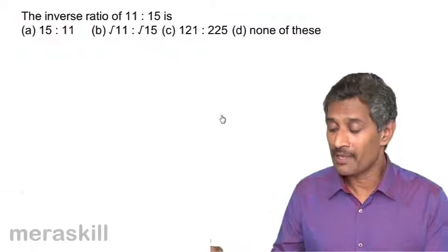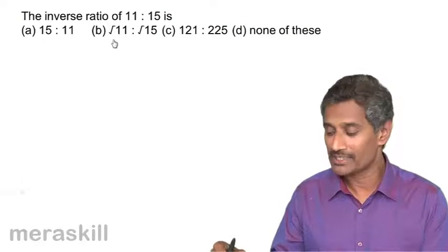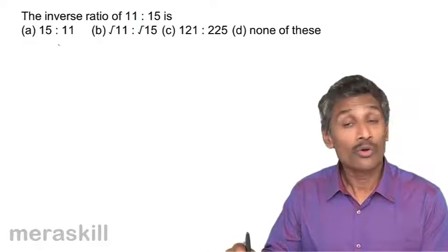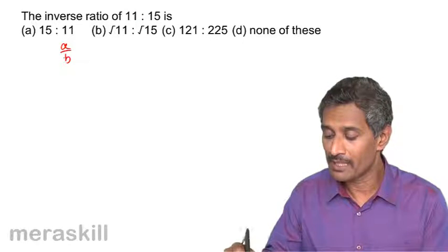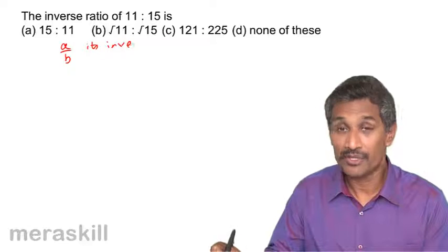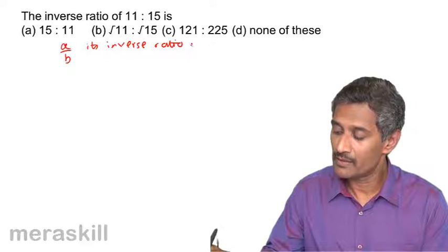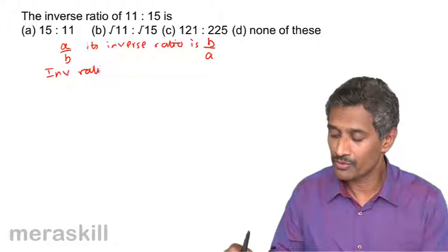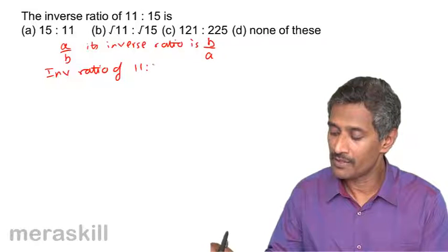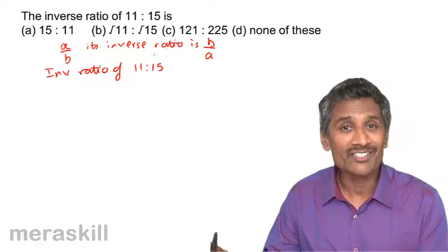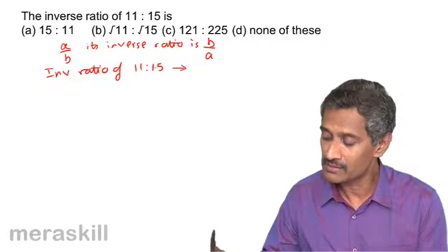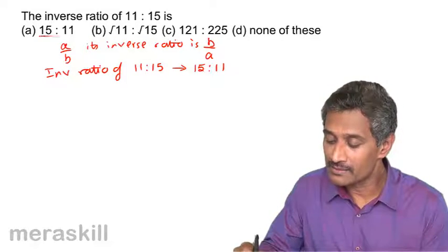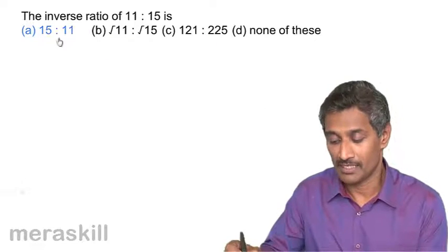Now let's see how we can apply these things in the following examples. Let's take the inverse ratio of 11 is to 15. Remember, if you have a ratio a:b, its inverse ratio is b:a. Hence, the inverse ratio of 11:15 — you're just interchanging the consequent and antecedent — and it becomes 15 is to 11.